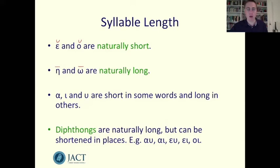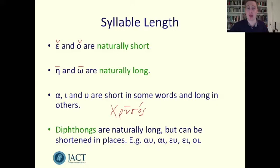For example, the word for gold, chrysos — the upsilon is long. You can find that out from a dictionary, but often this isn't actually necessary because you can usually work it out when you're scanning from the other syllables in the line.